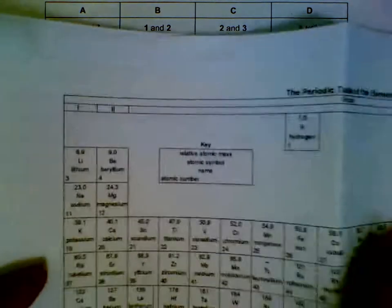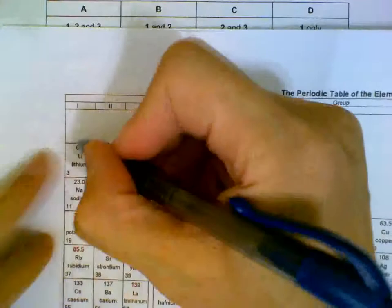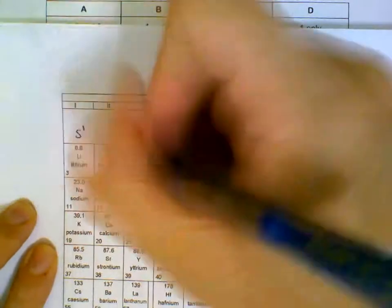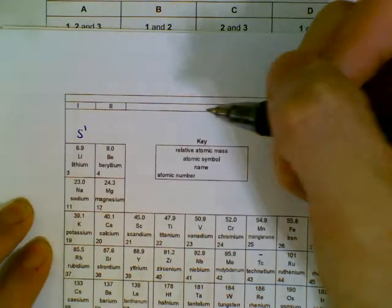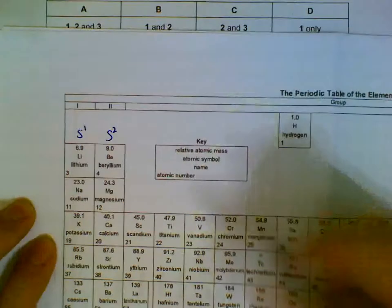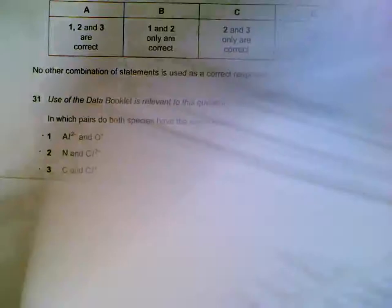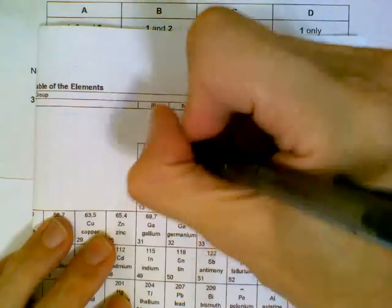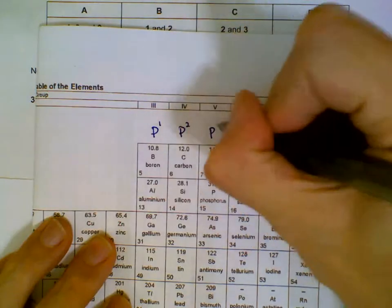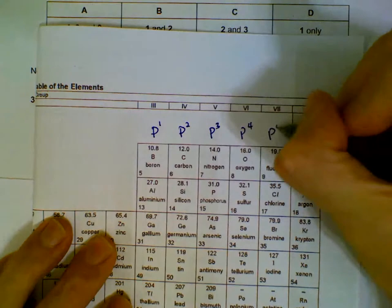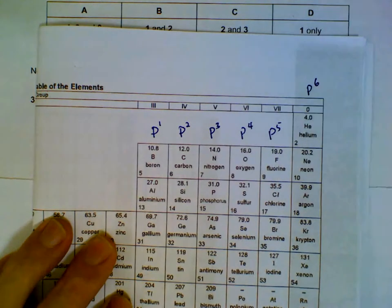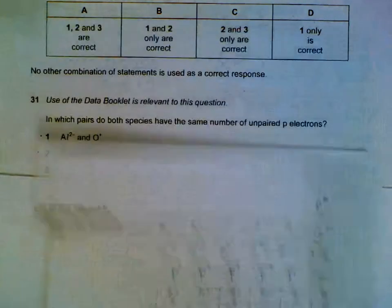When you have the periodic table, understand that those in group 1 under this column will be expected to have an s¹ configuration at the end, and those in group 2 s². After the s is filled up, we will go to p¹, p², p³, p⁴, p⁵, and when we reach the noble gas they will be p⁶. So back to the question.